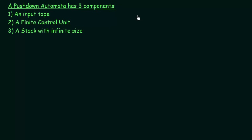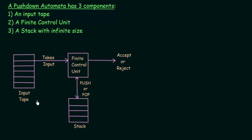A Pushdown Automata basically has three components. The first is an input tape, which is like the input string. The second is a finite control unit. The third is a stack with infinite size. The input tape holds the input string, which is given to the finite control unit. Based on the inputs, something will be pushed or popped from the stack, and finally the string will be accepted or rejected. How the stack works and how a string is accepted or rejected will be discussed in more detail later.